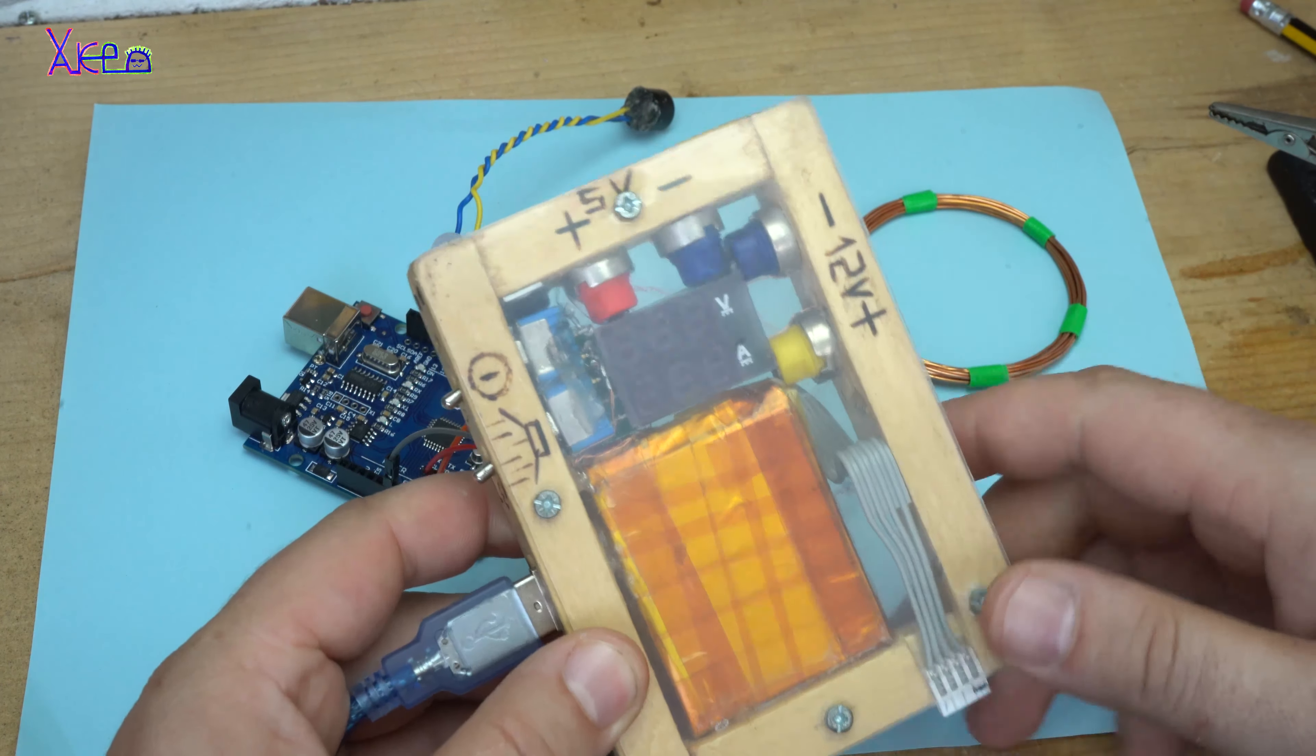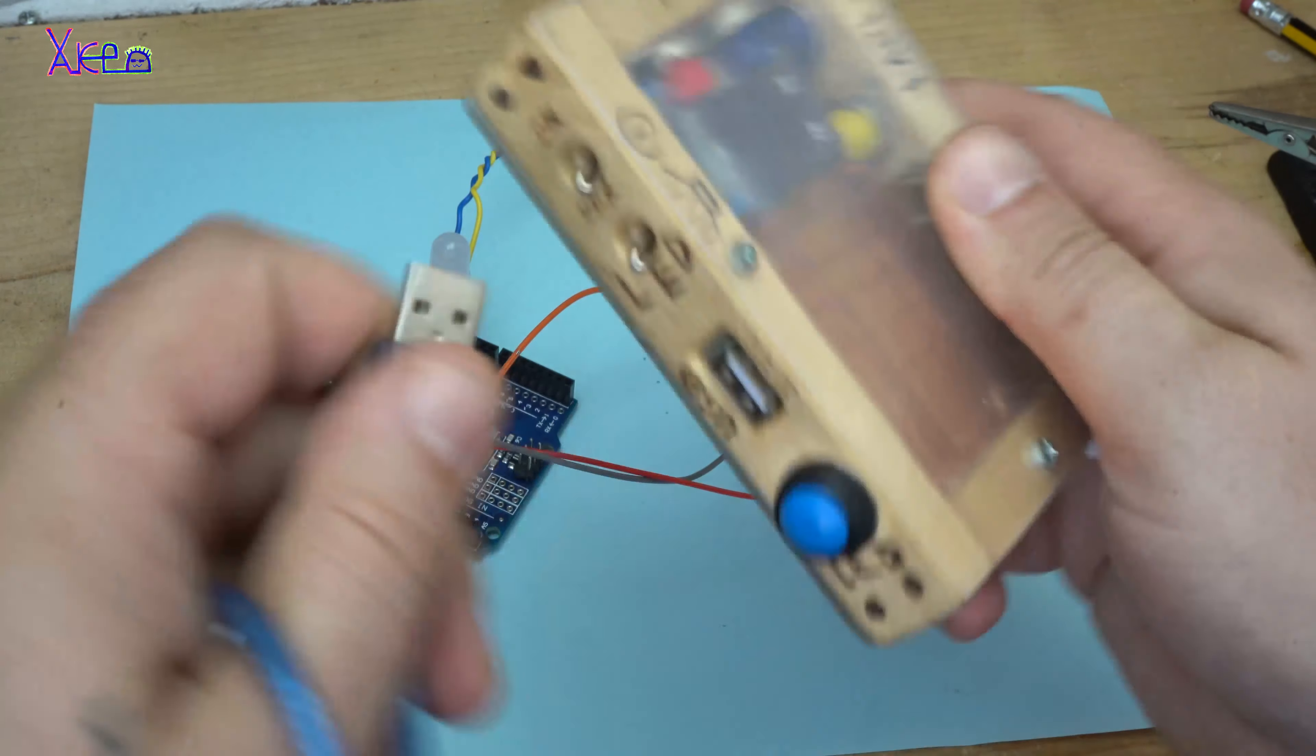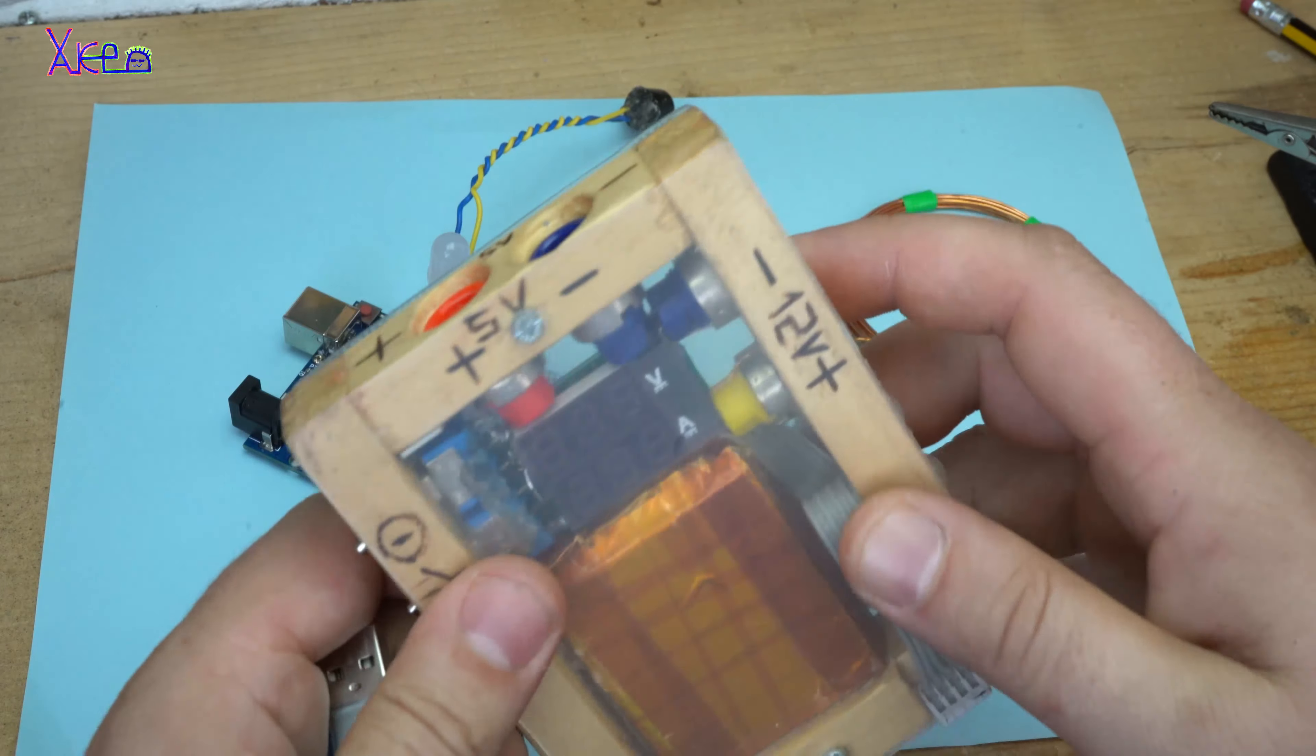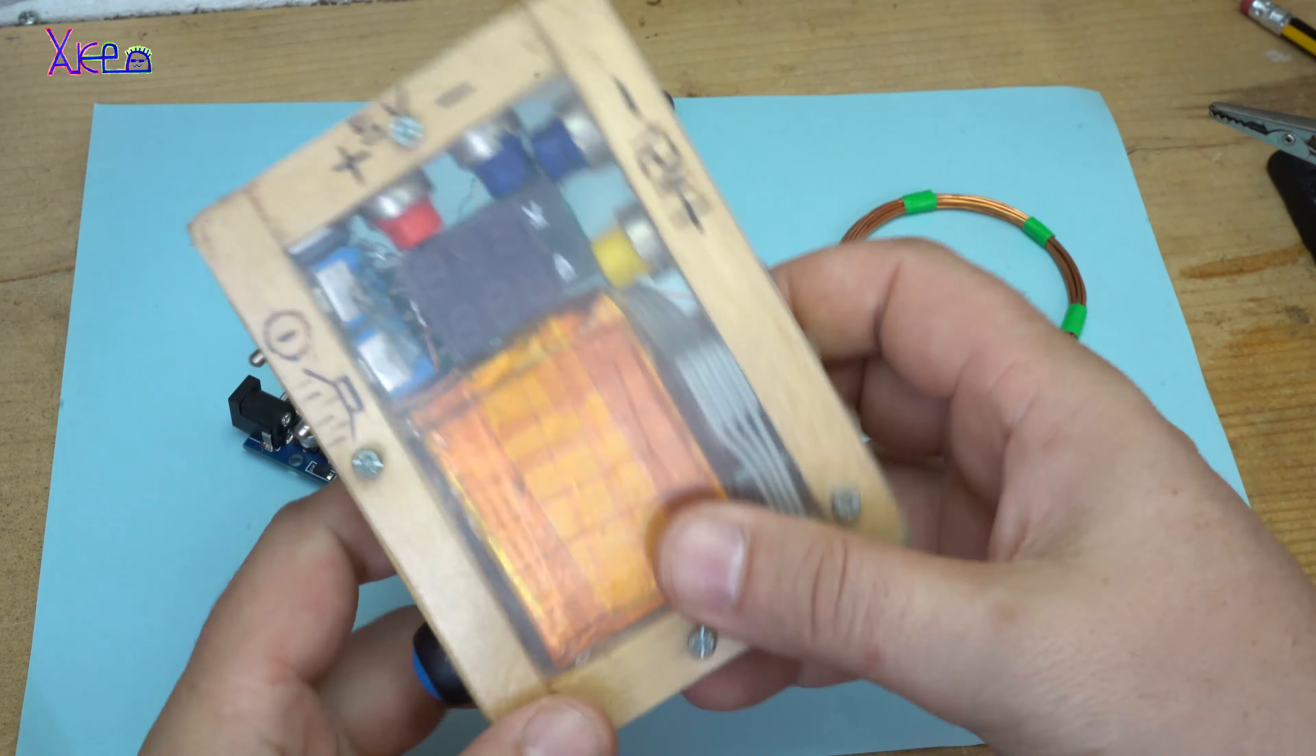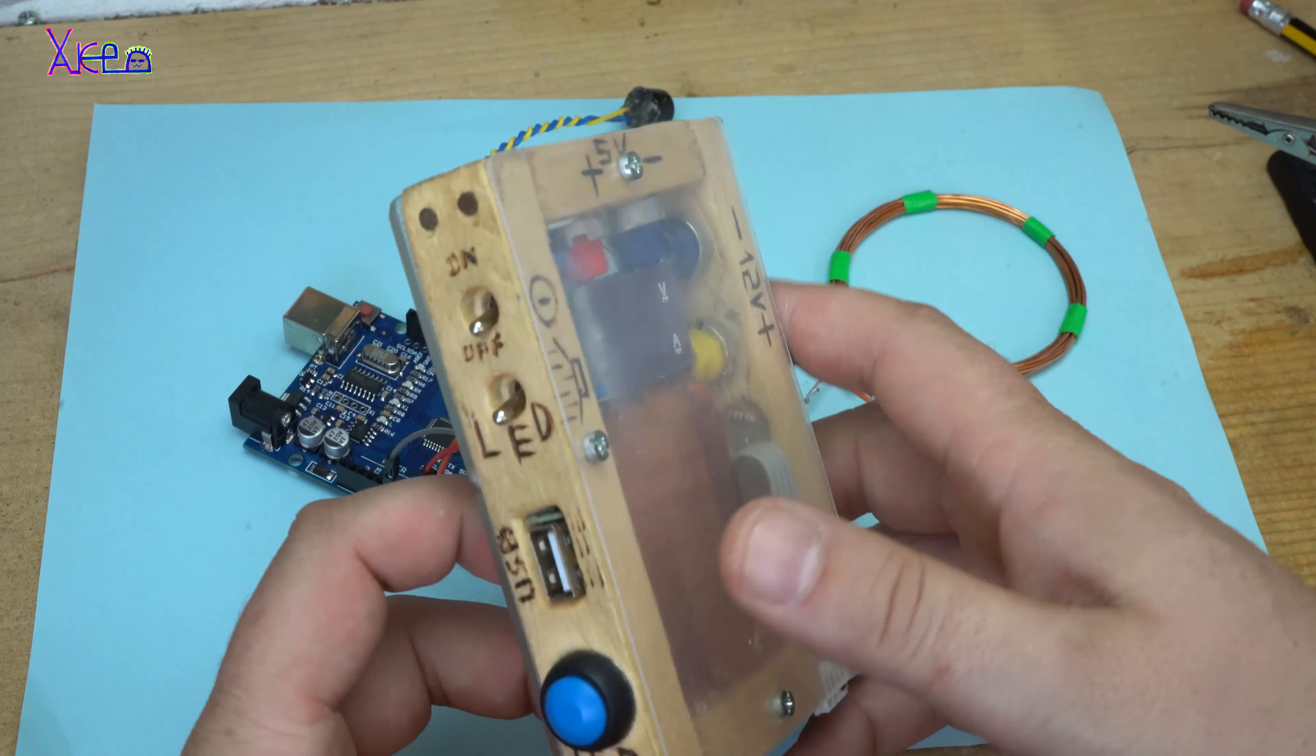This is my homemade power supply that gives 5 volts, 12 volts. It has a flashlight. I will put a link below so you can check it, how I made it.